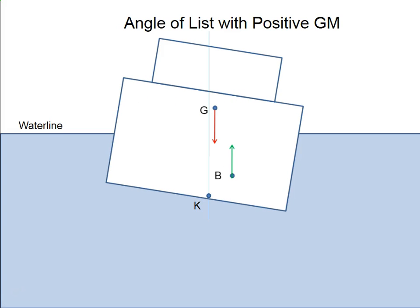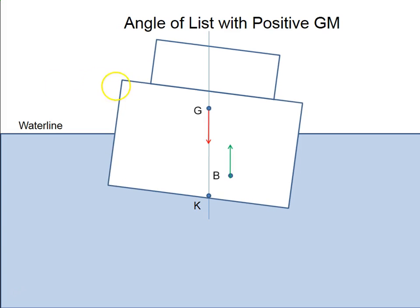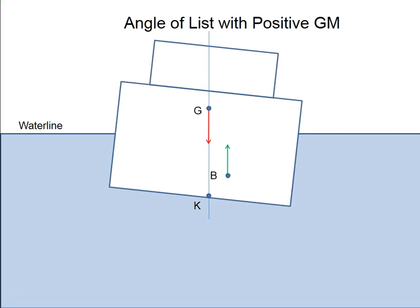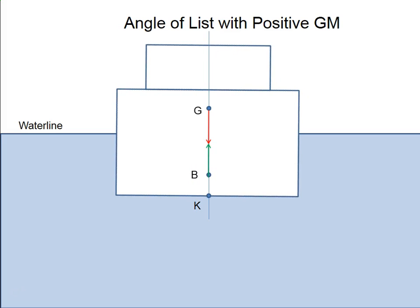So as soon as I remove that weight, you can see G is moving back to the center line. And at that moment that G moves back to the center line, you can see that G and B are separated again. So we have that arm being created, GZ. In this case, it's a positive righting arm, and the vessel is going to come back up to the upright position. Now the vessel will roll around the center of gravity again, but this case, it'll roll equally to either side. This is much safer than having an angle of list.